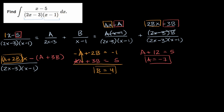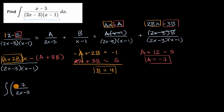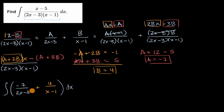So now we can rewrite this entire integral. It equals the indefinite integral of: negative seven over (two x minus three), plus four over (x minus one), all times dx. If you're so inspired, pause the video and try to solve from this point — we have seen these techniques before — but I'll do it step by step.